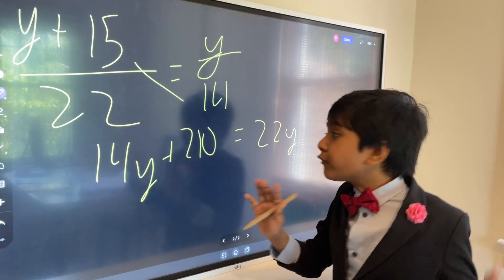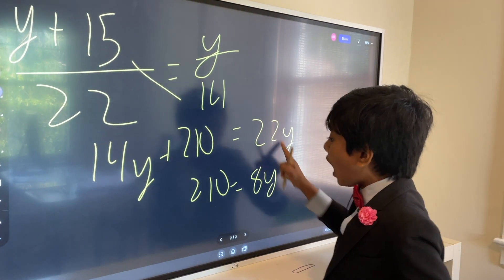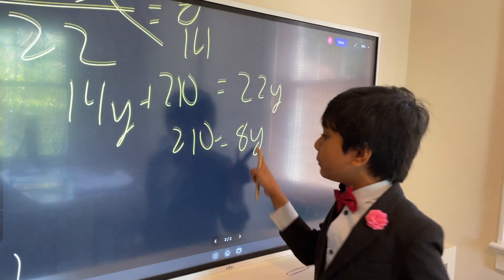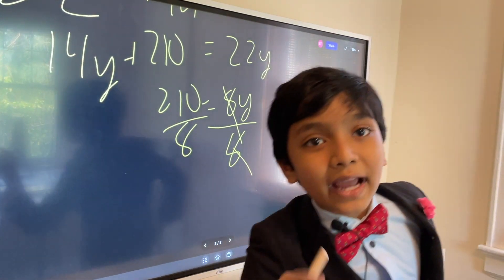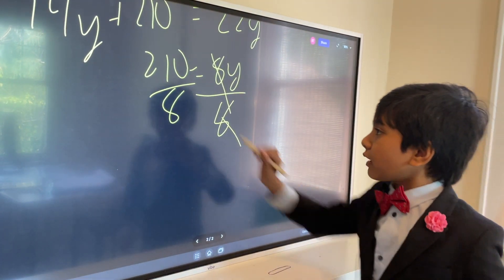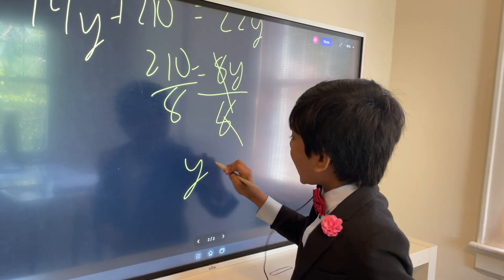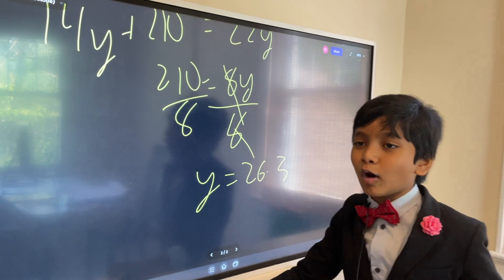Now we subtract 14y from both sides, giving us 210 equals 8y. Alright! Now we have to divide both sides by 8. Cancel, cancel! What is 210 divided by 8? Anybody tell me? No? Alright! Let's solve it. 210 divided by 8, that is 26.3! And now we have found both x and y!